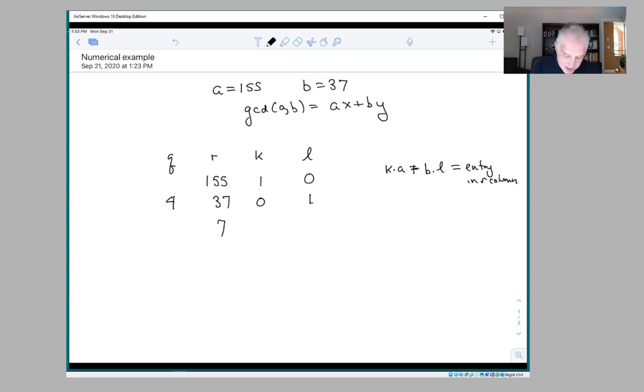And the thing you need to remember is this pattern: this entry minus Q times this entry, because you do that in all three columns. So 1 minus 4 times 0 is 1, and 0 minus 4 times 1 is minus 4. And then you can check that 1 times 155 minus 4 times 37 is in fact equal to 7.